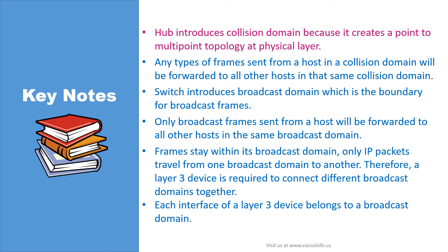A hub introduces collision domain because it creates a point-to-multipoint topology at the physical layer. Therefore any types of frames sent from a host in a collision domain will be forwarded to all other hosts in that same collision domain. A switch introduces broadcast domain, which is the boundary for broadcast frames. Only broadcast frames sent from a host will be forwarded to all other hosts in the same broadcast domain.